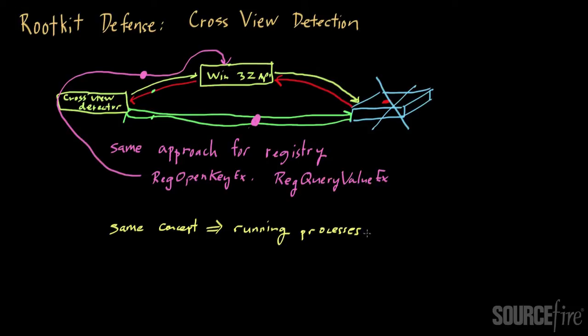There are also other ways in which you can look at lists of running processes that are a bit more subtle. And again, if those lists don't agree, then that's again a sign that the rootkit is on the system and is causing the results to differ from each other.